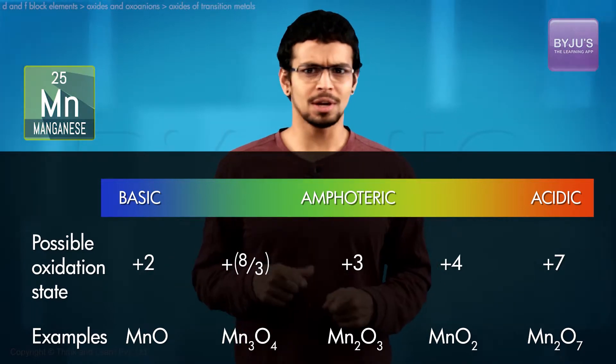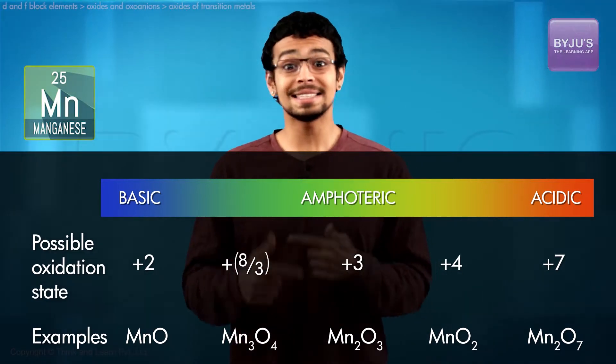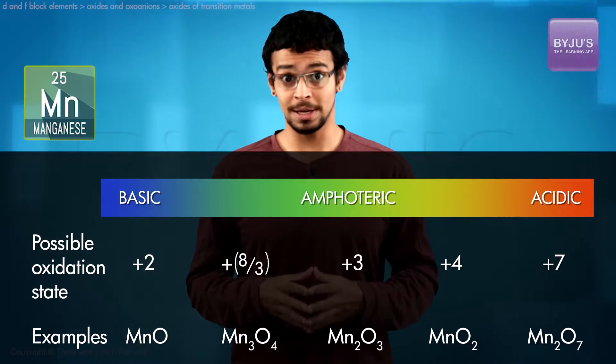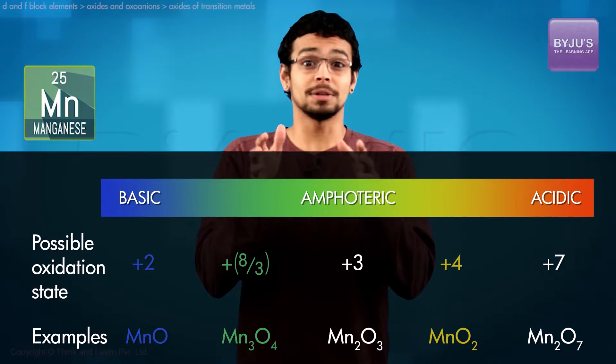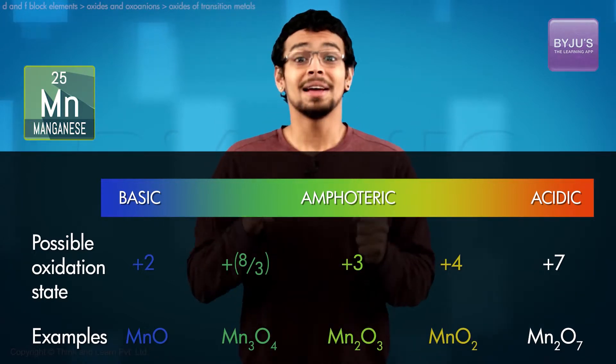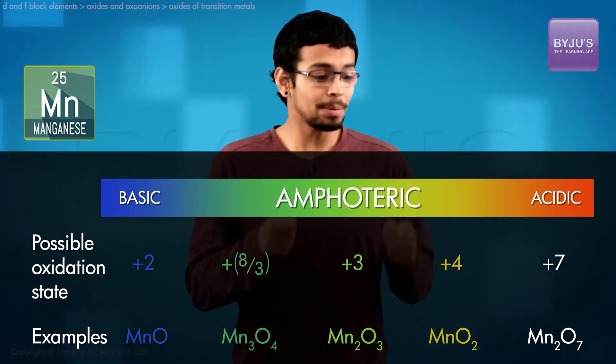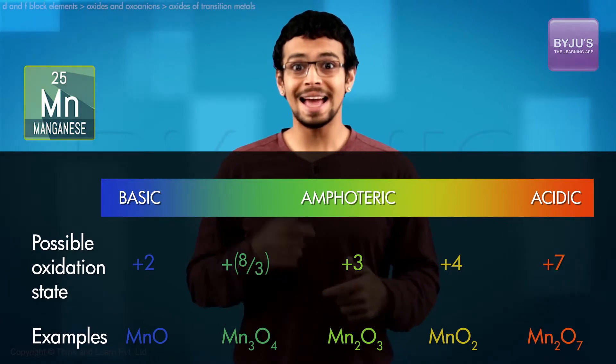The oxidation number of manganese with increasing acidic character in manganese oxides would be +2 oxidation state being predominantly basic, +8/3, +4, +3 being amphoteric, and +7 oxidation state being acidic oxide.